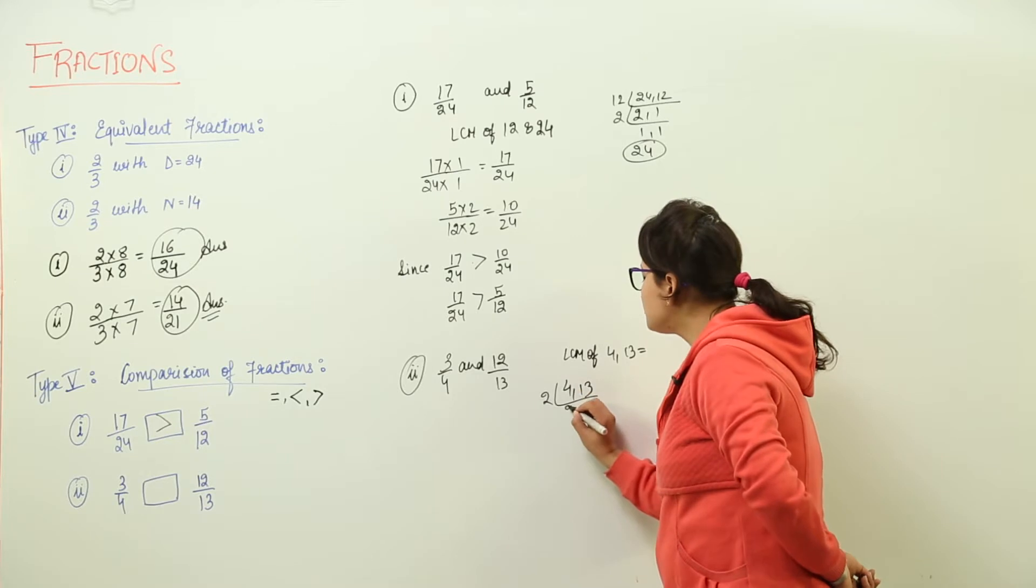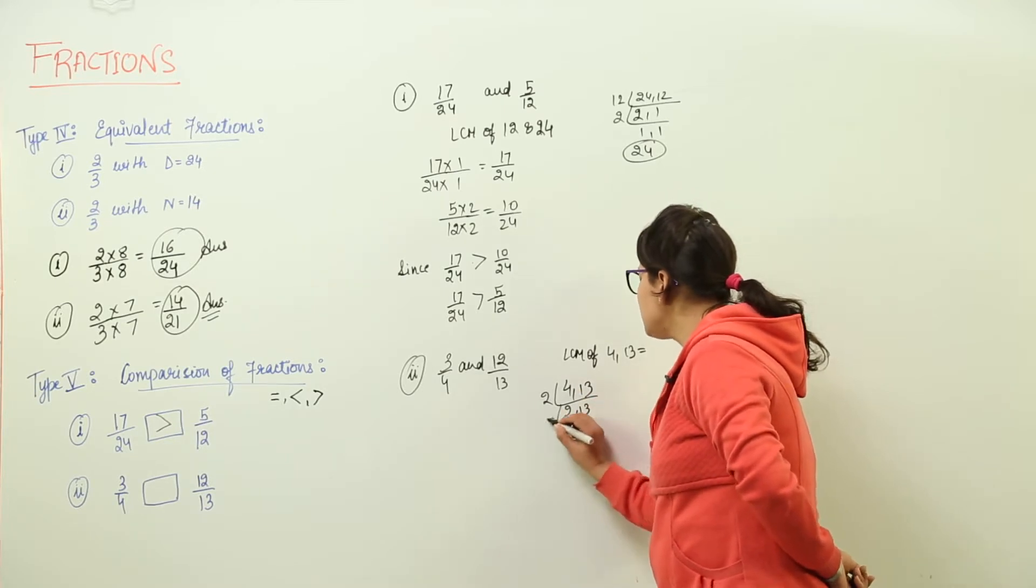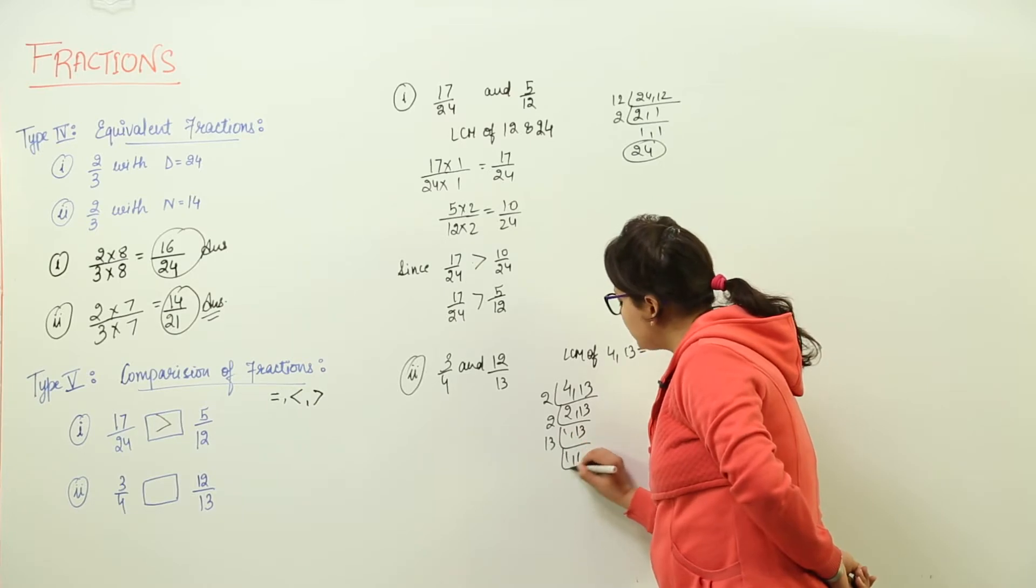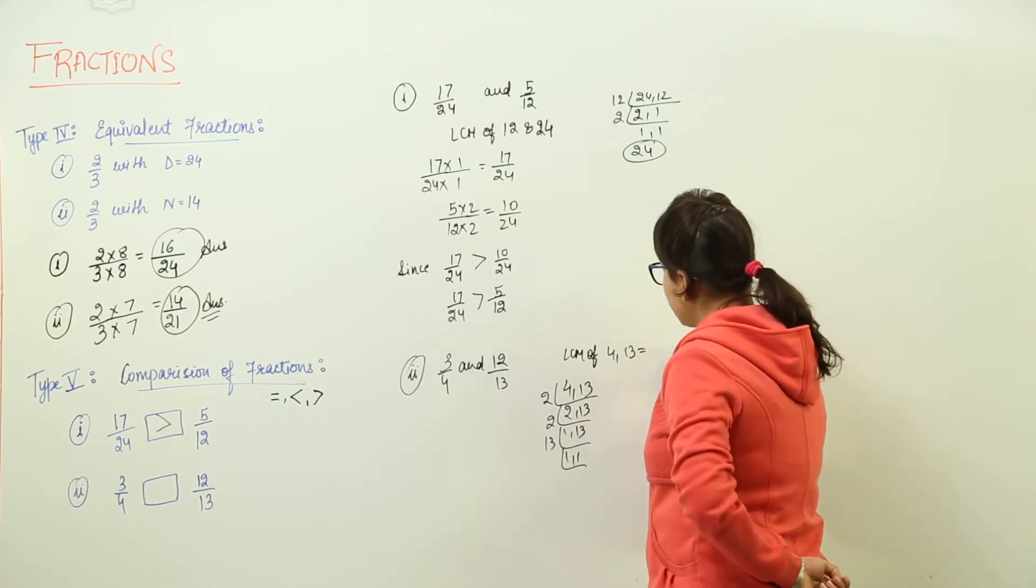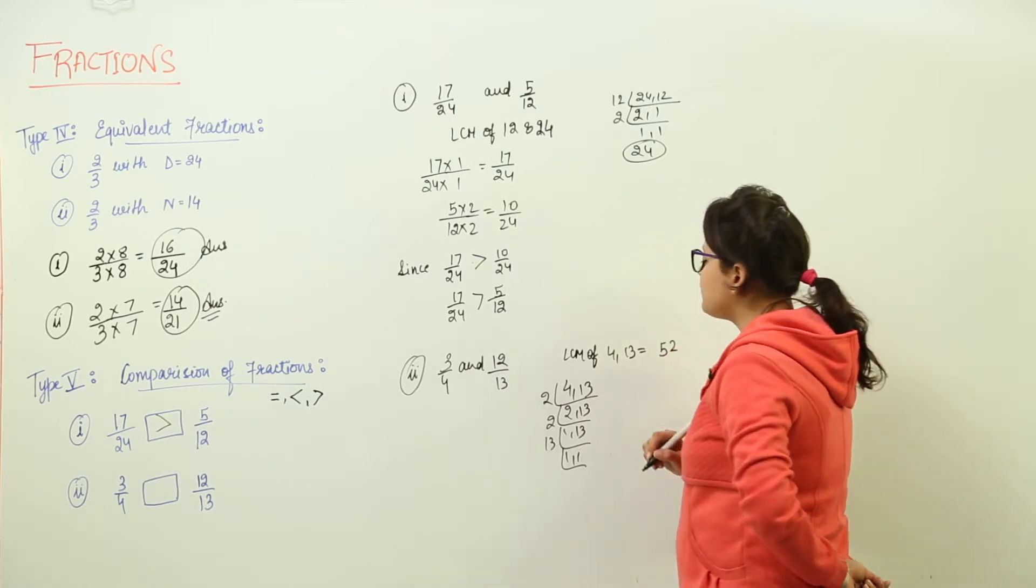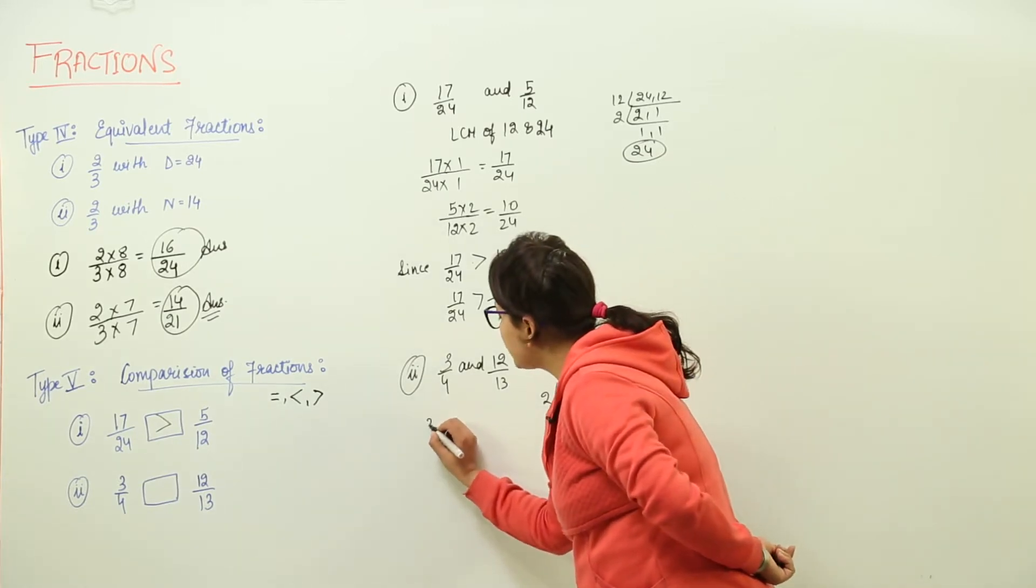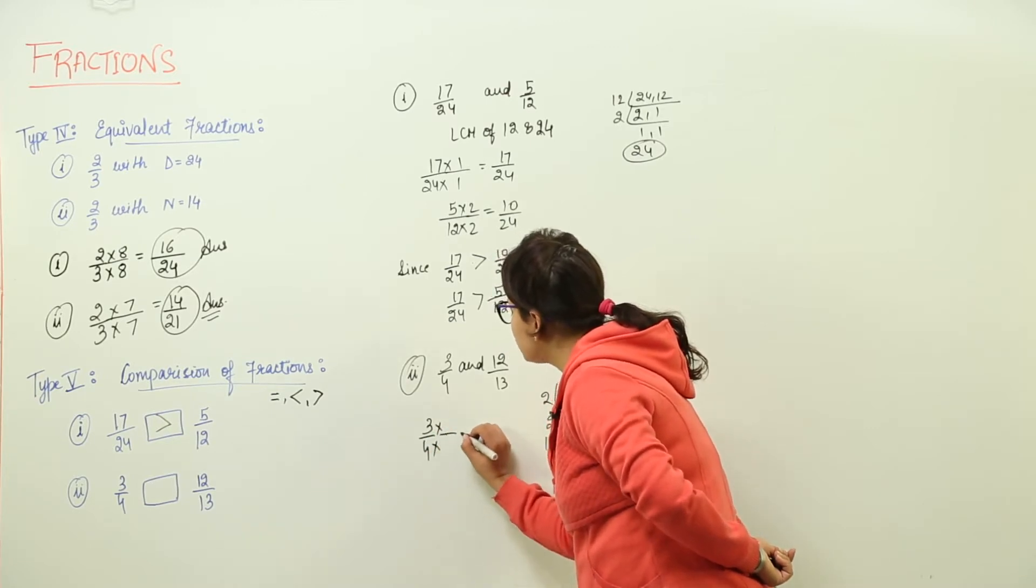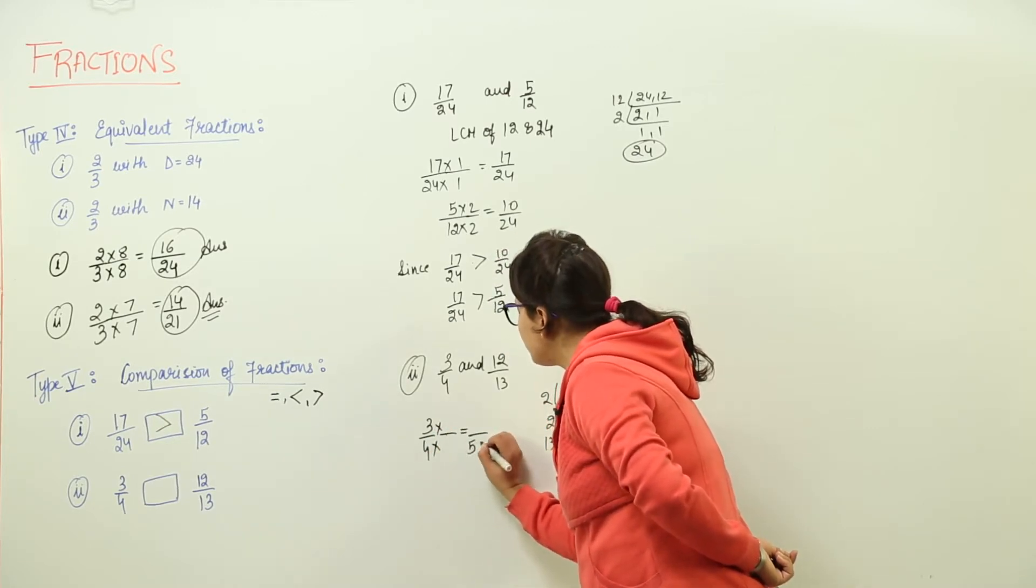Let us check: 2 into 2 is 4, 13; 2 into 1 is 2, 13; and 13 into 1 is 1. So 13 into 4, we get 4 times 13 is 52 as the LCM. So that means we have to convert the fractions such that their denominators come out equal to 52.